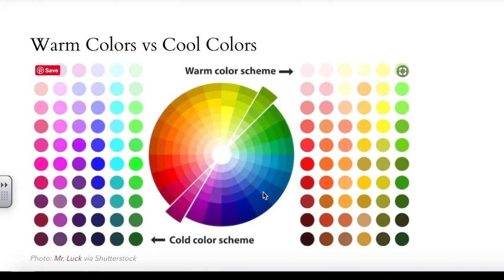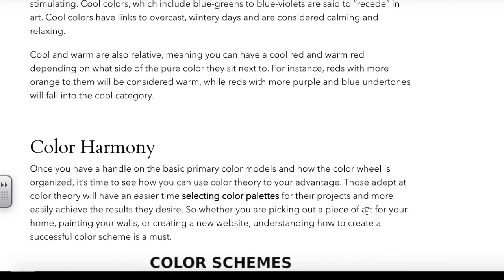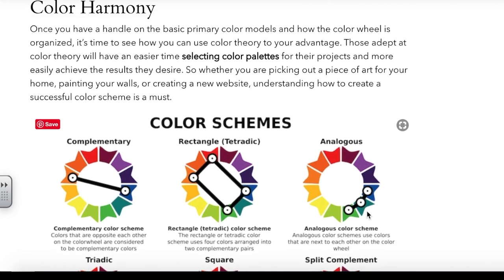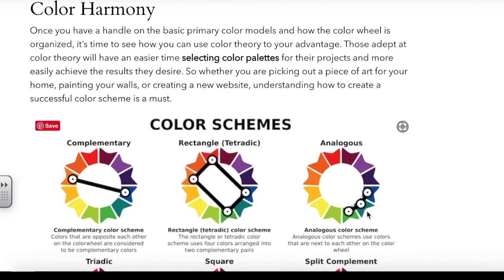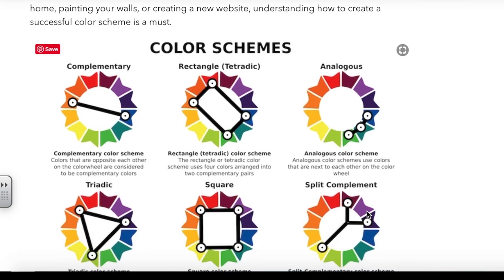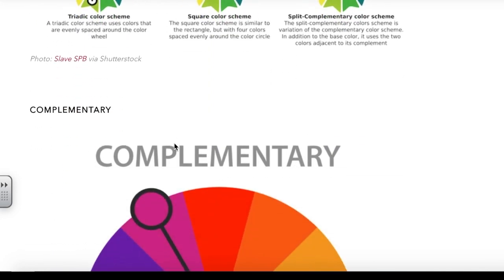You might already know about warm color schemes and cool color schemes. Once you have a handle on the basic primary color models of how the color wheel is organized, it's time to use that color theory to your advantage. You'll be selecting color palettes for your projects, and it's easy to achieve the results you want when you know more about how to use the colors together.